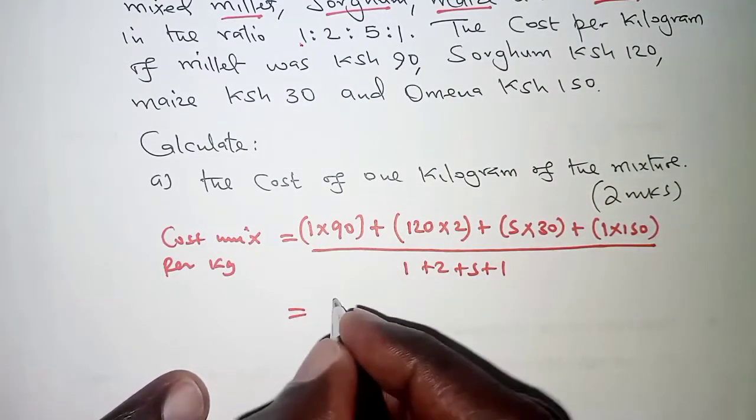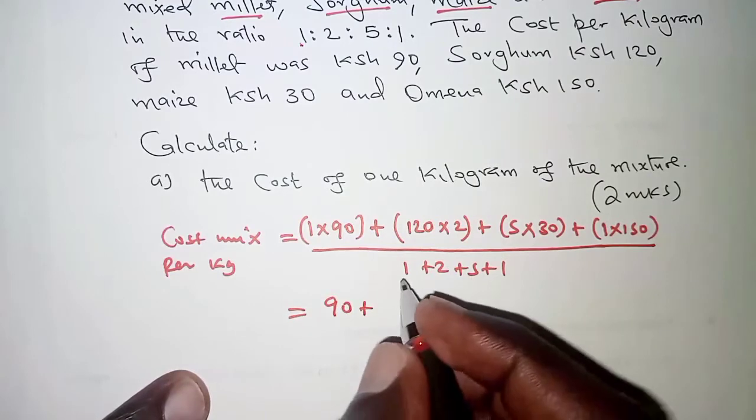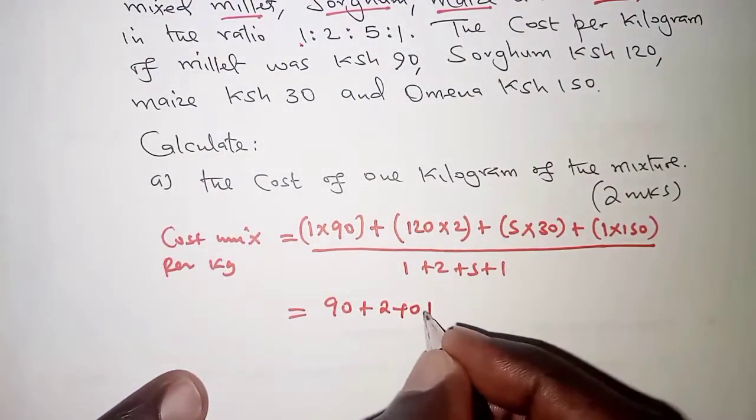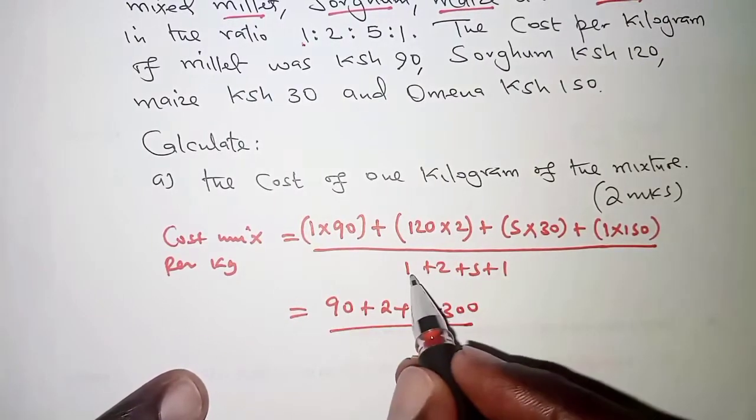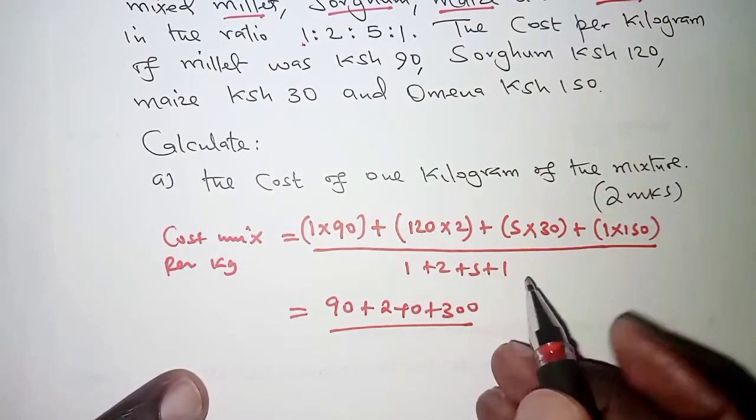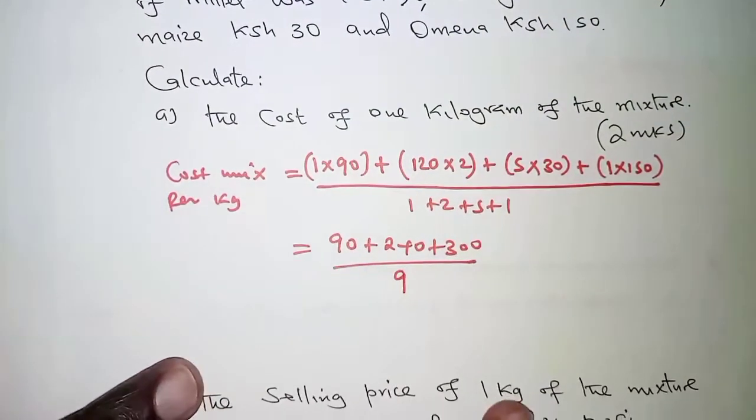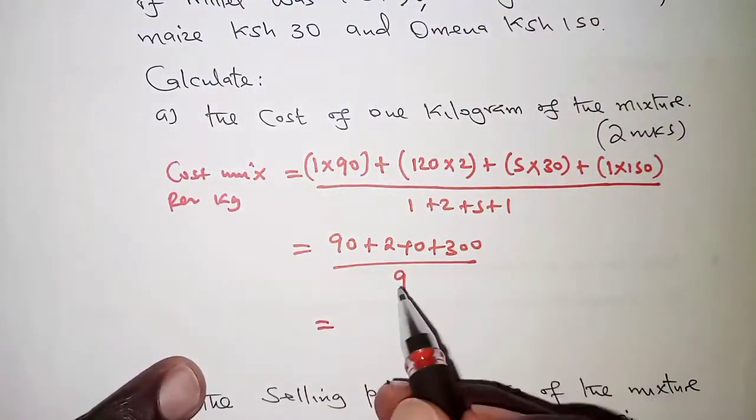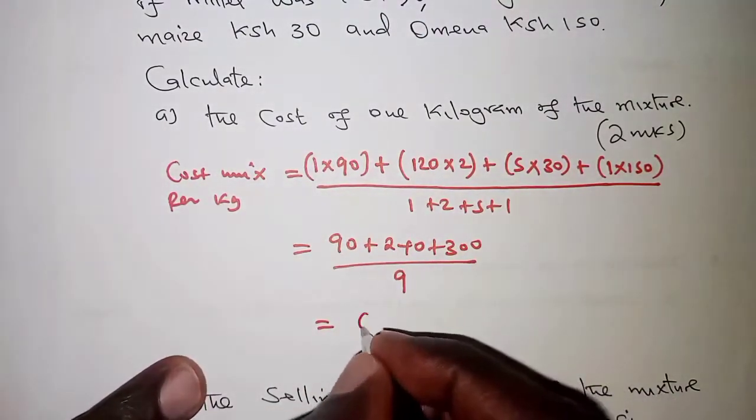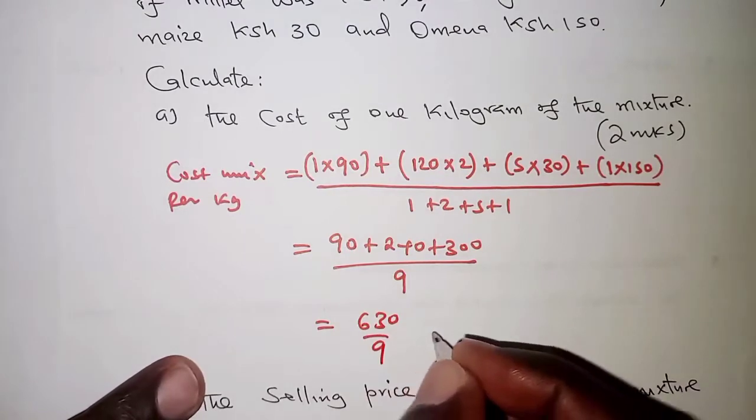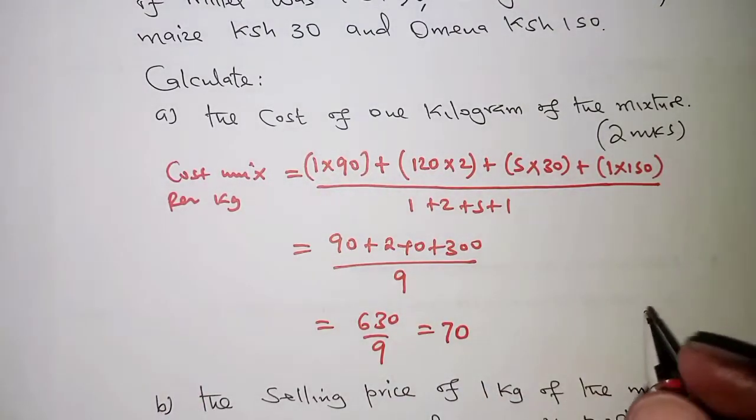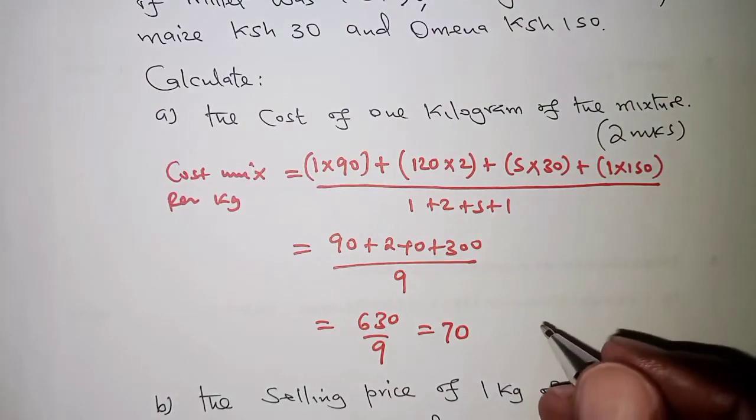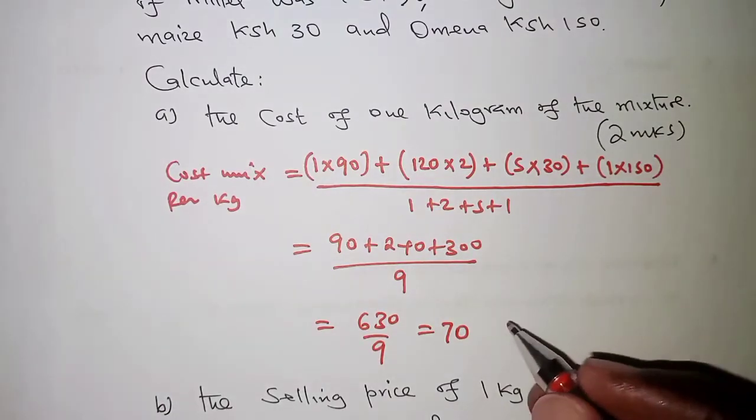So that is 90 plus 240 plus 150. That is 300. All over 3 plus 5 plus 1. That is 9. Here we are going to get 630 over 9. And that is 70 shillings per kilogram. Well, that is for part A.